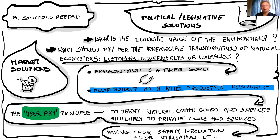This idea is called the user pay principle. The user pay principle is based on treating natural common goods and services similarly to private goods and services — treating environment components as private goods and services. We know that when we use somebody's private goods or want some services from someone, we have to pay for it. That's something natural, and then we put them into our calculation of economic efficiency.